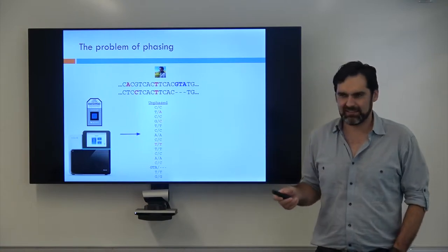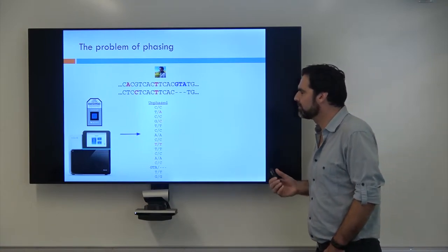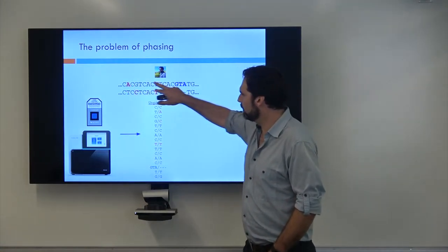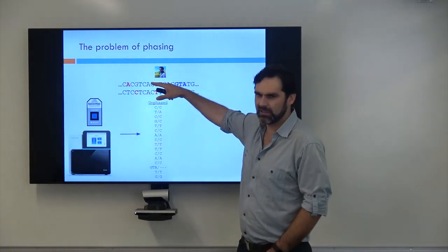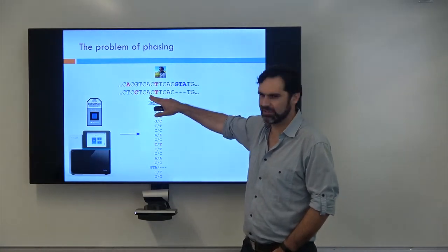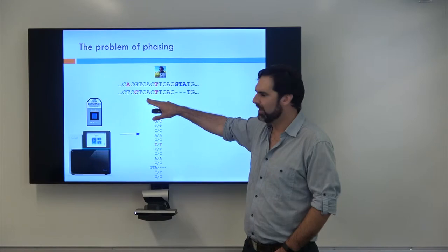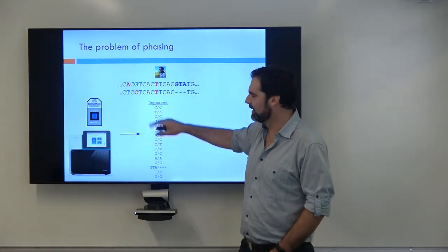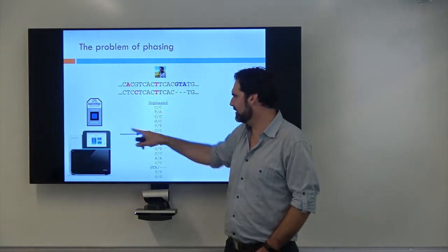The problem with both genotyping and sequencing is this issue of phase. And so this is my true genome, right? So I know which variation is on this haplotype and what variation is on that haplotype, right? However, the machine doesn't tell me that.